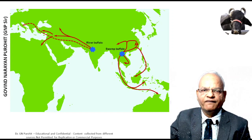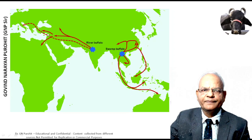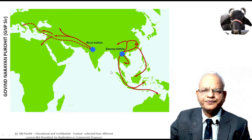This figure shows how the buffalo originated and spread to different parts of the world. The river buffalo spread from India to many parts including Africa, Europe, South America, and Gulf countries like Iran, Iraq, and Turkey.